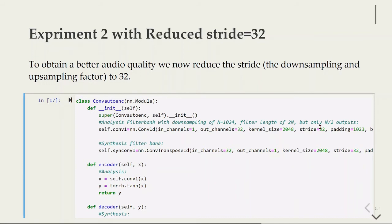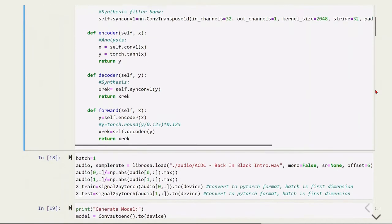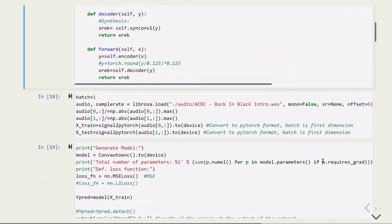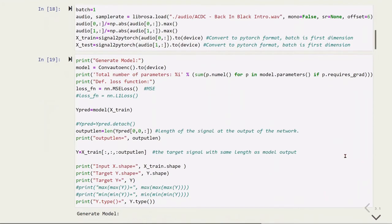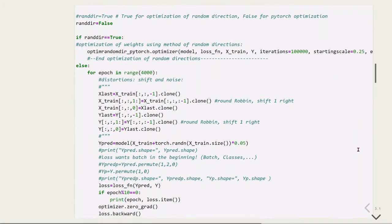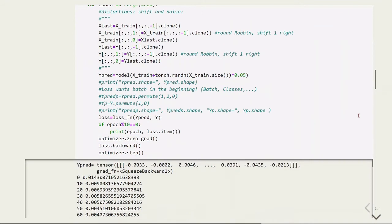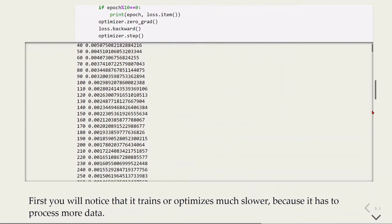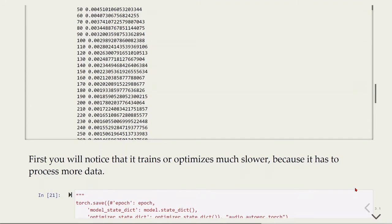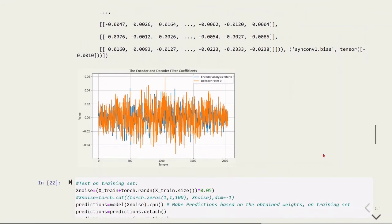The model is exactly the same, we just changed the stride value. We will do the same thing. It's the same audio for training and for testing. Everything stays the same. We still have this round robin with the shift by one to the right. We are adding noise for training. But now you will notice that it trains or it optimizes much slower than before because now it has to process much more data. Here again we are plotting the encoder and decoder filter coefficients.